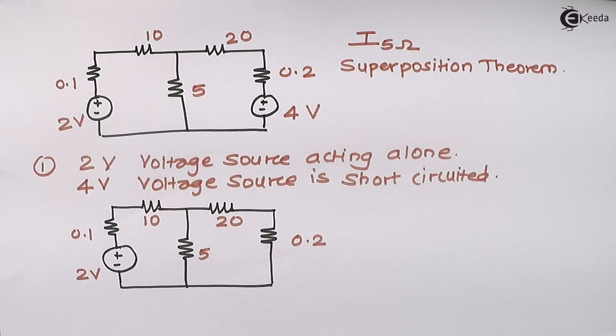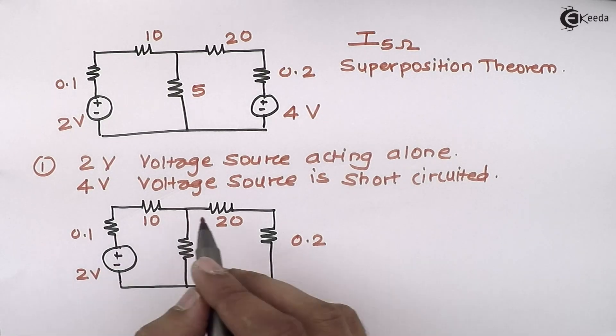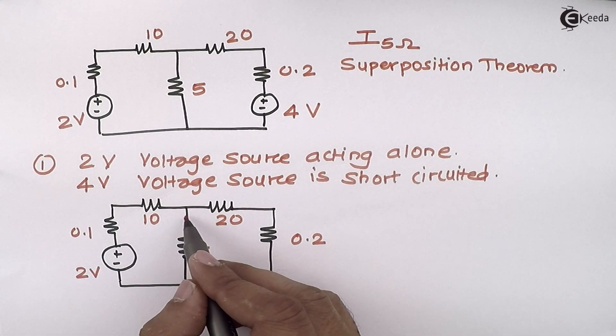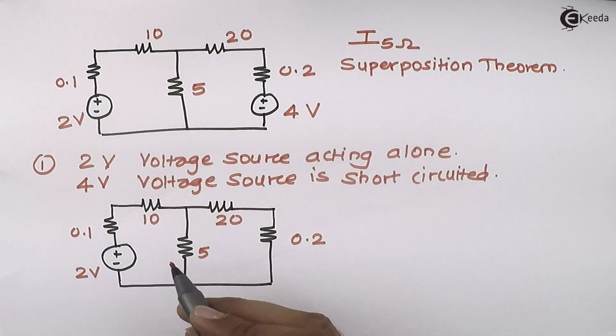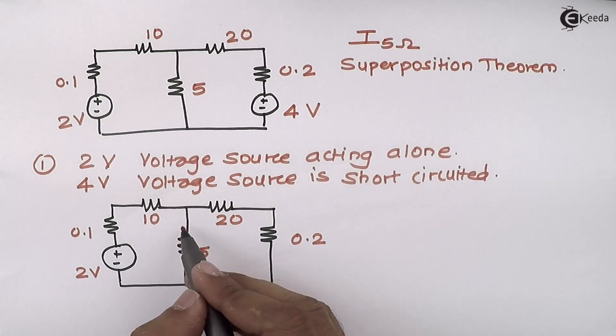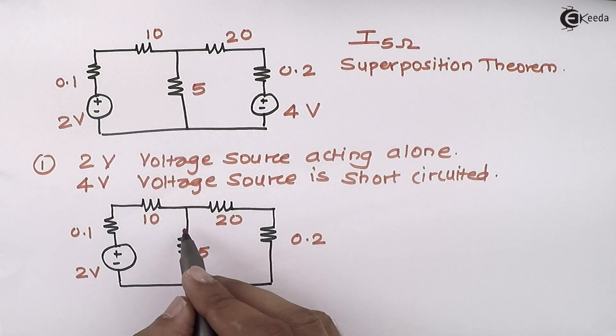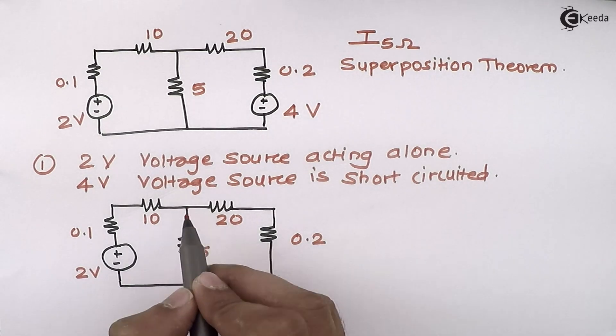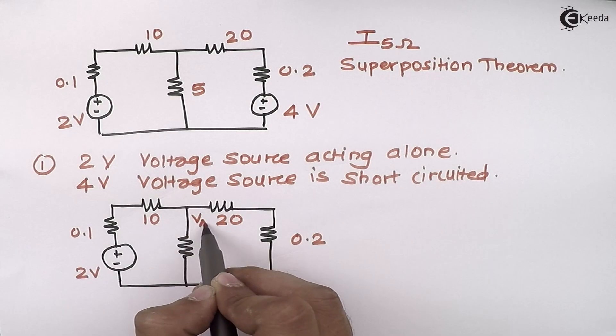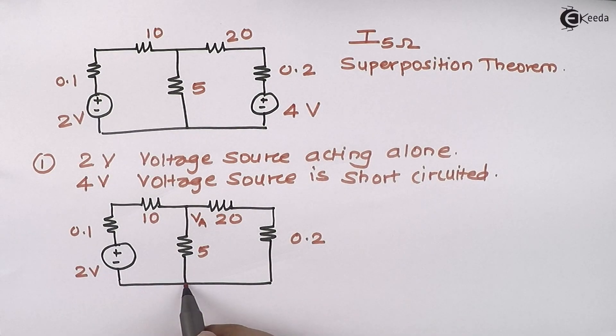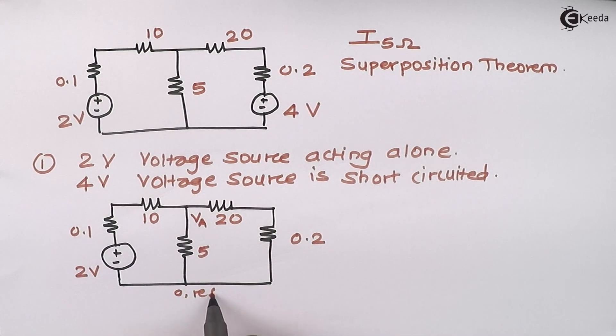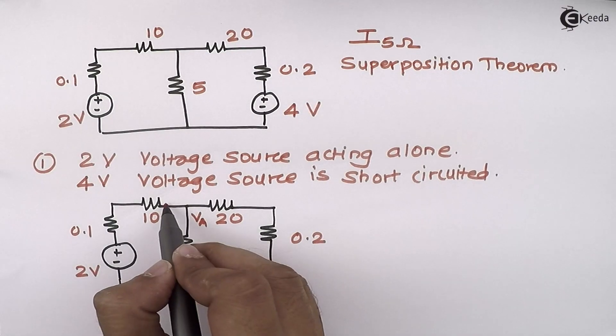So you will get this circuit. You have to solve this circuit for current flowing through 5 ohm. You can use mesh analysis or nodal analysis to solve this problem. I will prefer nodal analysis. I'm having one node here whose potential is VA and the other node is reference. I will mark all branch currents.